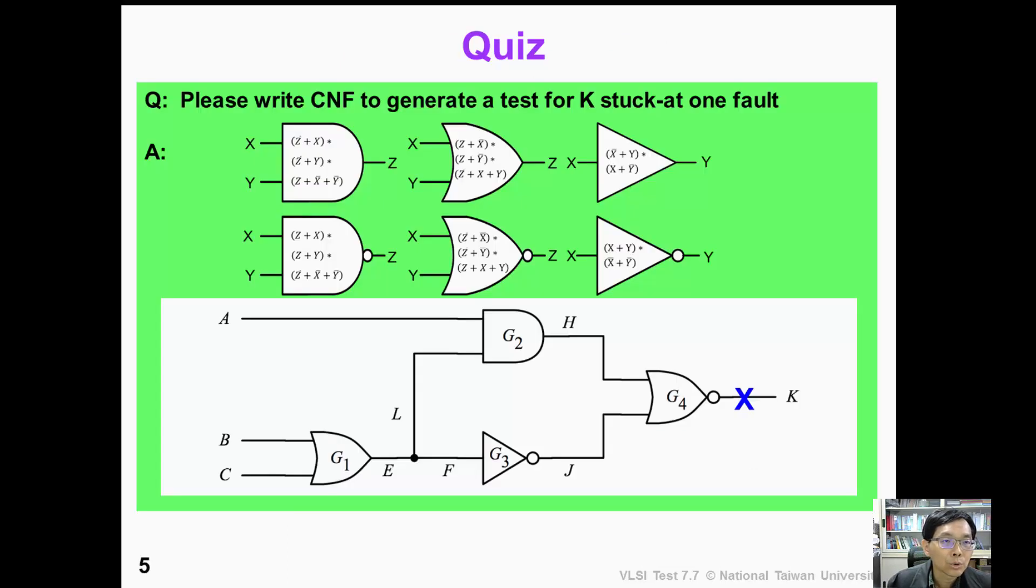Now it's time for you to do a practice. Given this example circuit, we need to write the CNF to generate a test for K stuck-at-1 fault. In this particular example, we don't actually need the miter circuit. We just need to find the inputs such that K is equal to 0. Please now pause the video and write the CNF.